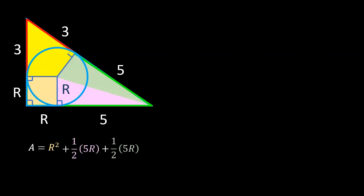Plus the area of this triangle, which is 1/2(3r). This triangle is identical, so another plus 1/2(3r). Simplifying, we have area of the triangle equals r² + 8r.